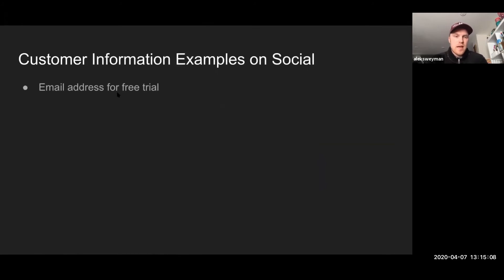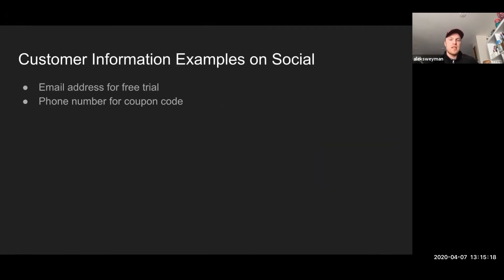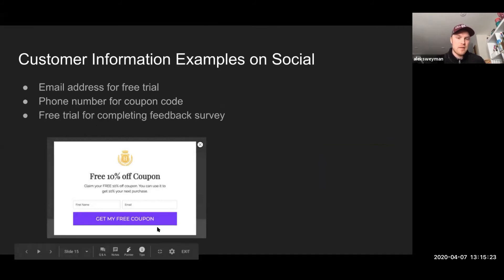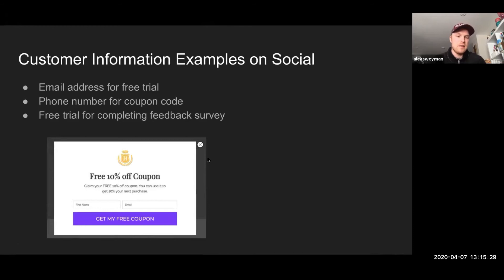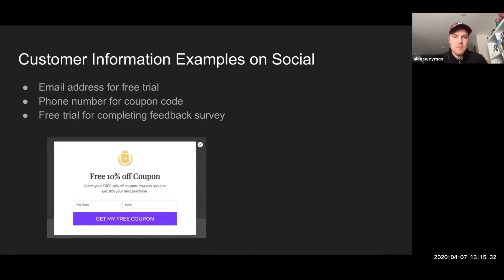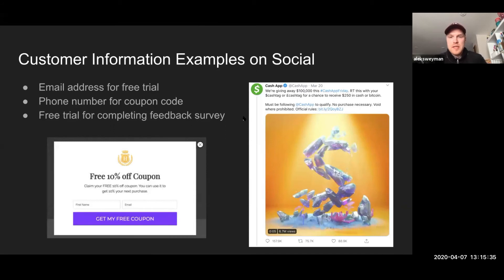Customer information — this is starting to gather actual information from customers, getting that email address for the free trial or their phone number so that you can give them a coupon code. We've all probably seen things like 'free 10% off coupon' pop up on websites. This is a really interesting example I want to talk about: Cash App. It's an app you can use to send money between people, kind of like Venmo. They do this thing called Cash App Friday — on Fridays they give away a hundred thousand dollars to people who retweet the post with their Cash Tag.